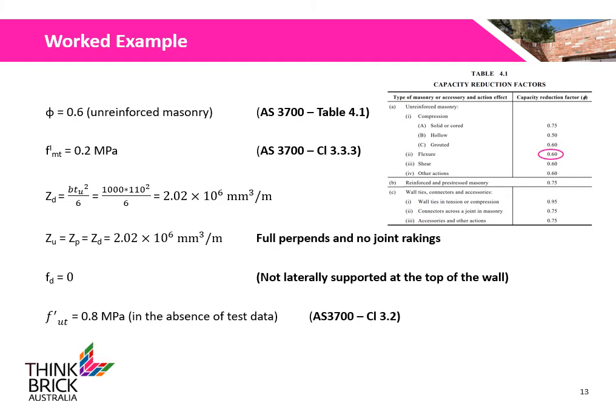The characteristic tensile strength of the masonry, FMt, is 0.2 MPa, derived from clause 3.3.3 of AS3700. The section modulus of the bedded area, ZD, is calculated to be 2.02 × 10⁶ mm³. As there are full perpens, no joint rankings, and solid masonry units are used, the section modulus of the perpens and units shall equal the section modulus of the bedded area. Given that the wall is not laterally supported at the top, Fd is 0.